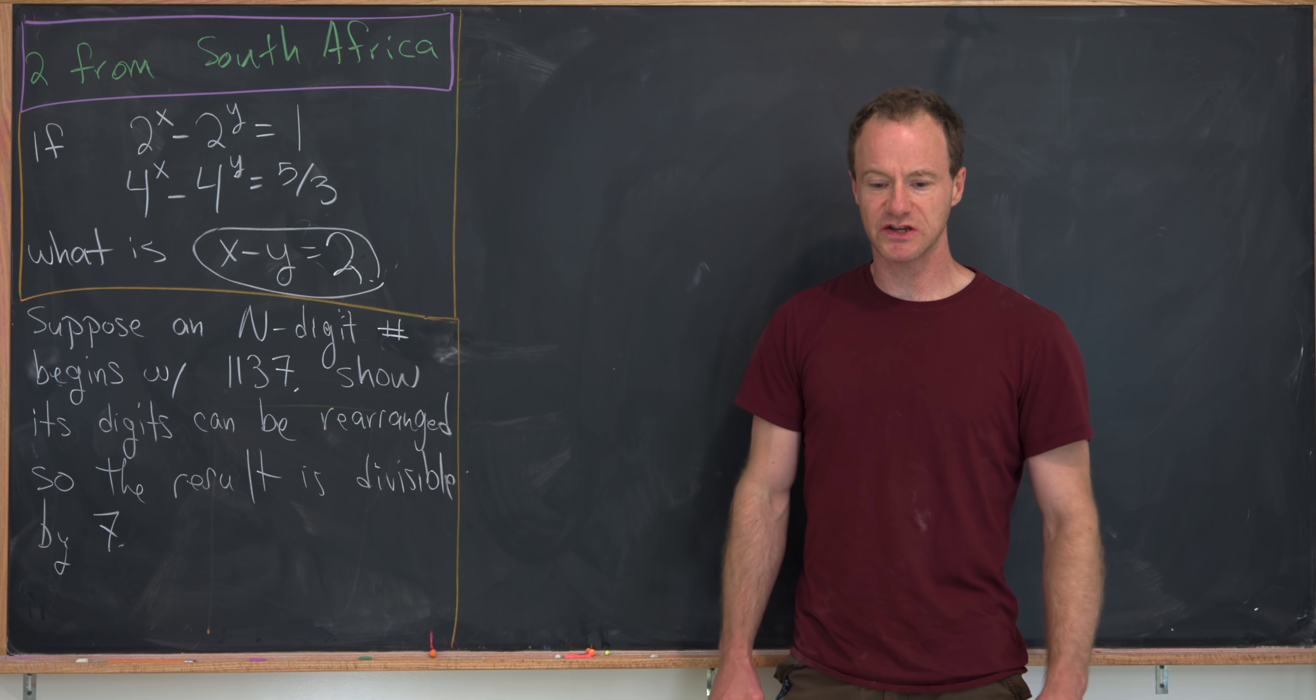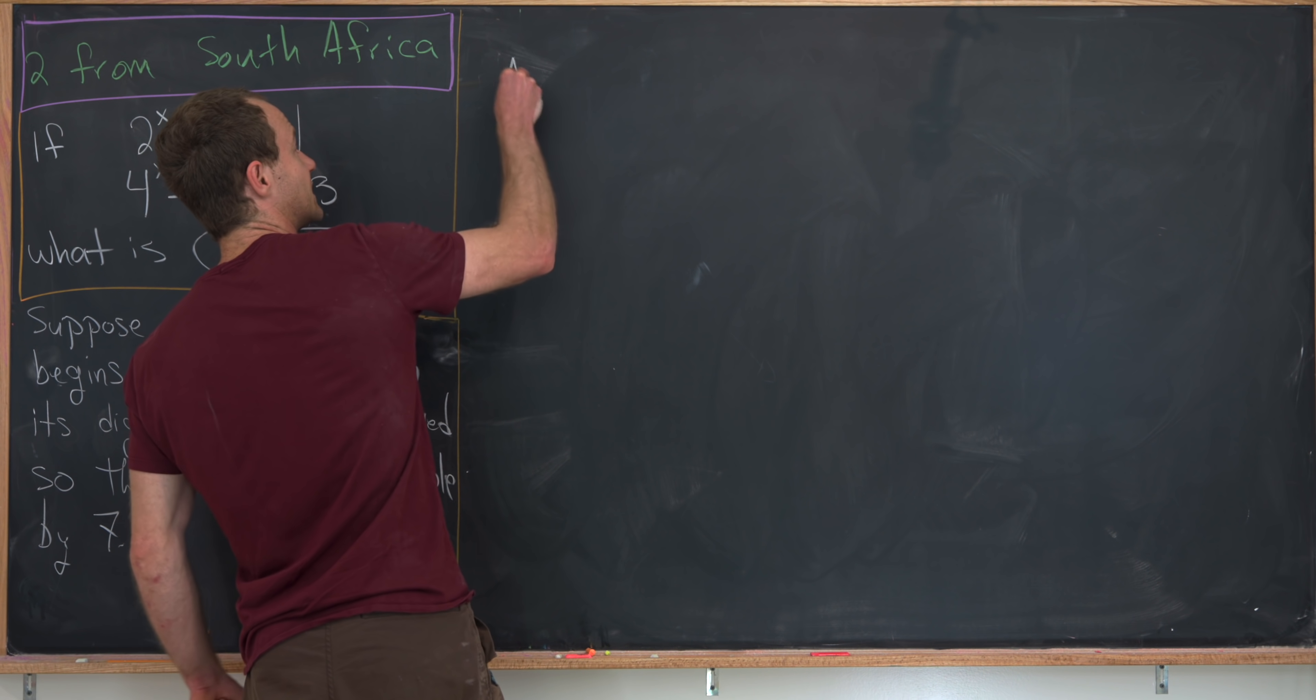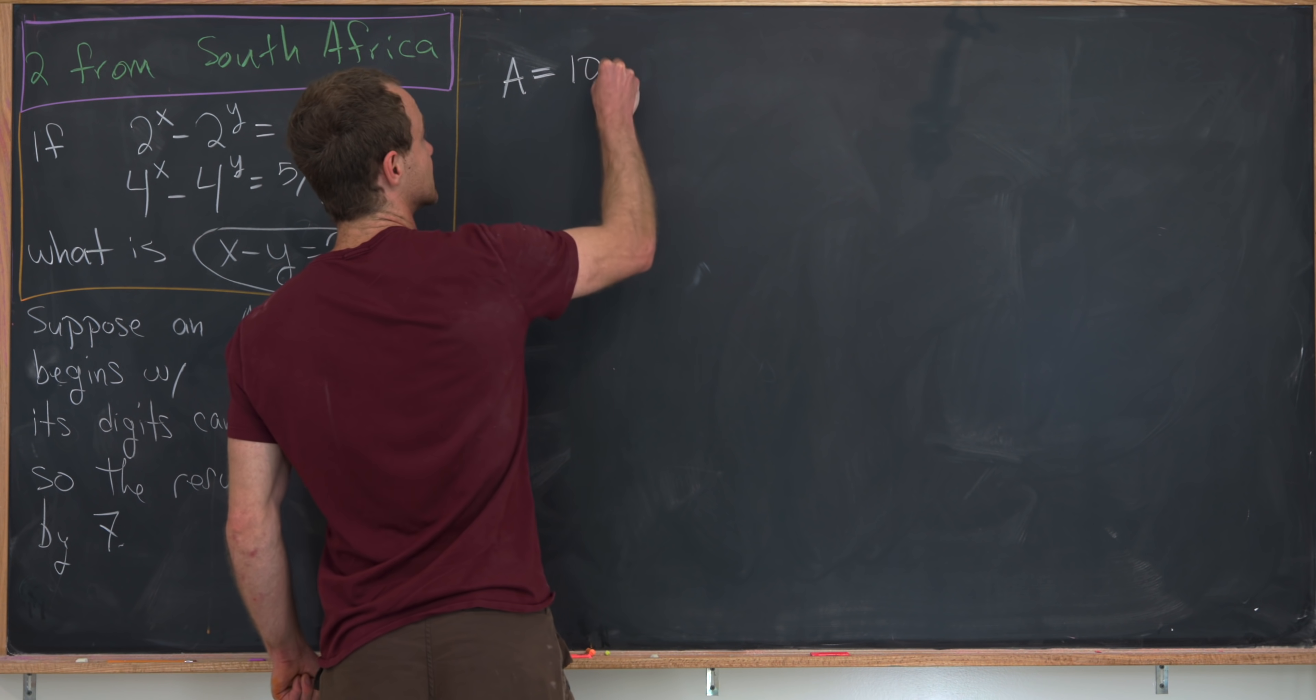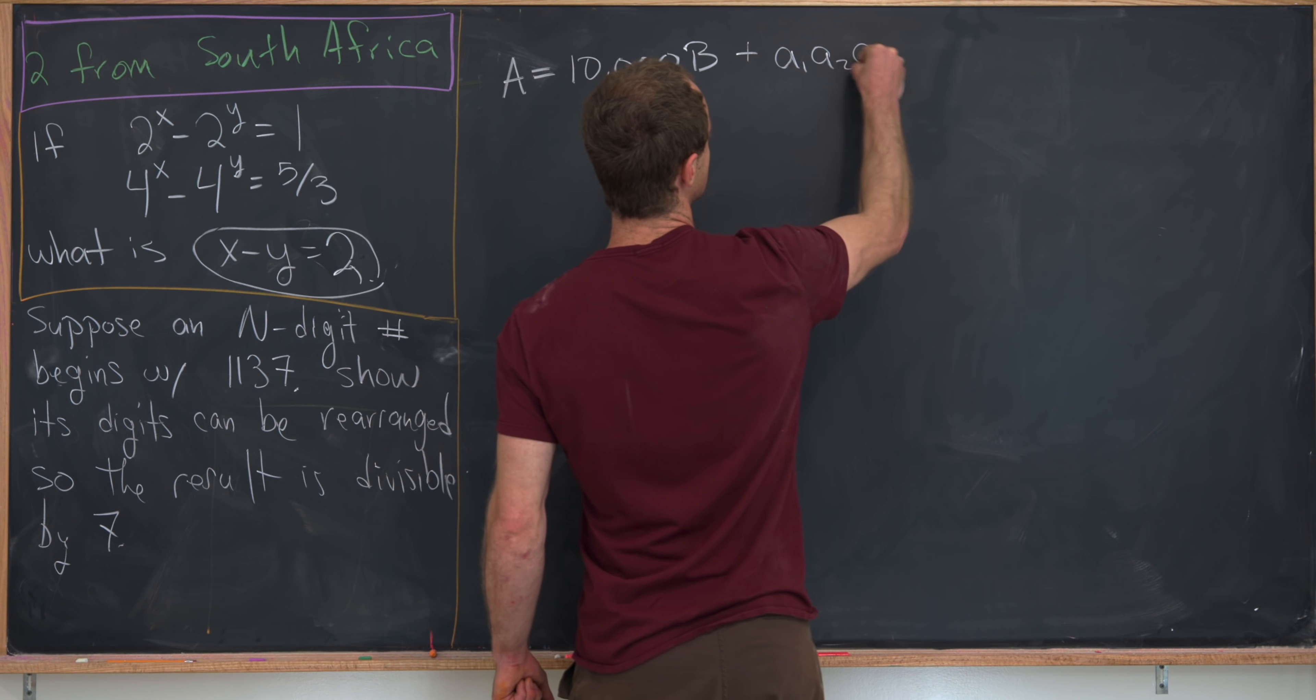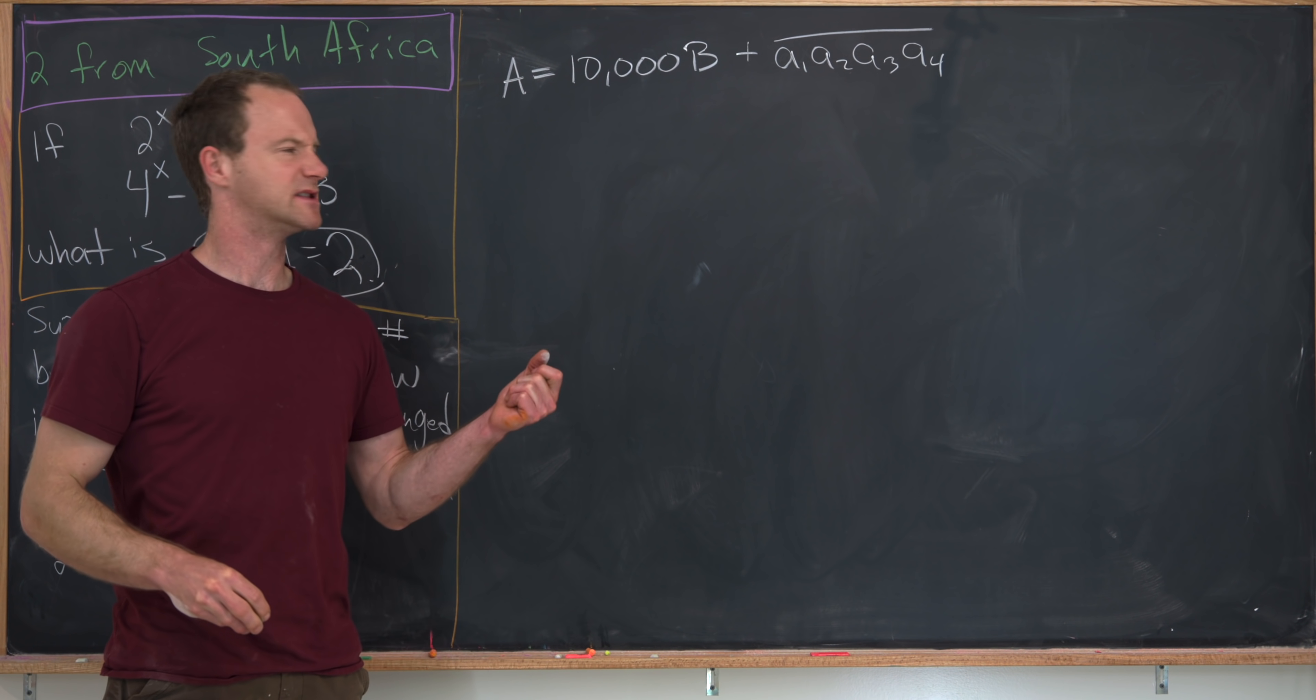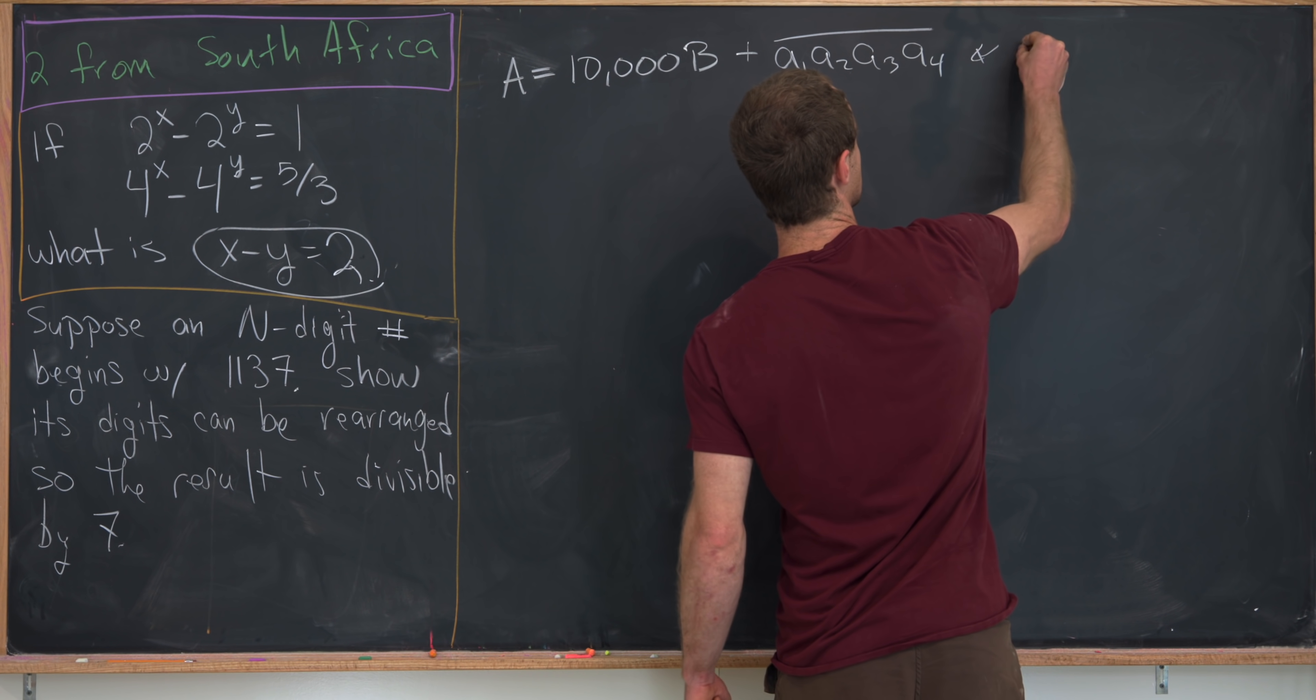So let's maybe start off by making the following rearrangement. So we've got a is going to be equal to 10,000 times b plus, and I'm going to write this as a1, a2, a3, a4 with a bar over it. And that just means the number that's made up with digits a1, a2, a3, and a4. So that tells us that here,